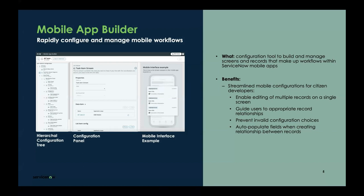To provide some context before we jump into exercises: Mobile App Builder is our configuration tool used to build and manage screens and records that make up your workflows within ServiceNow Mobile Apps. With Mobile App Builder, you can select an application scope, select the record you want to create or edit, populate record fields, and create relationships between different records — whether that's a screen, function, UI rule, or something else. We've streamlined all mobile configurations into this single interface, including auto-populating fields when you create relationships between records, so there's less navigation and fewer fields to fill out.